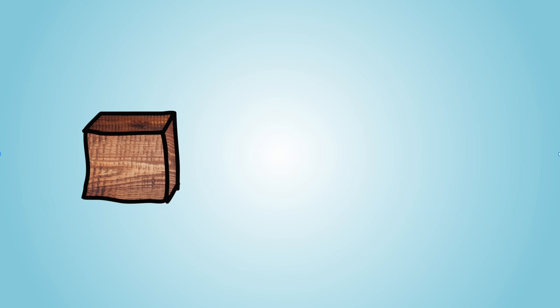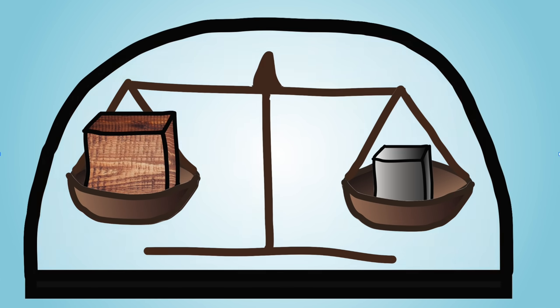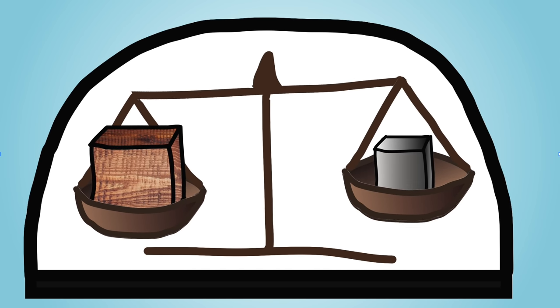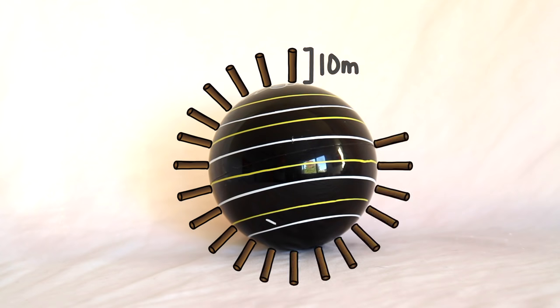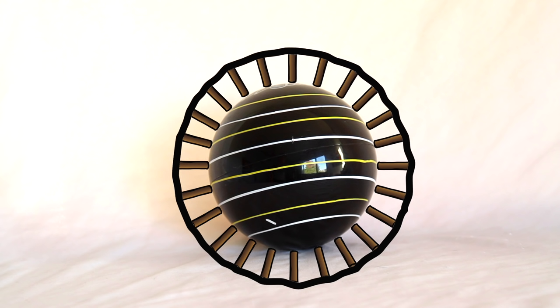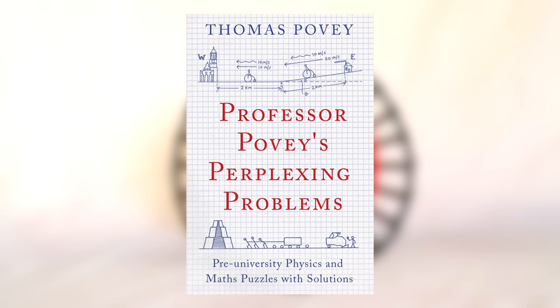If you want to try solving a few more problems using extreme cases, here are a few: You've got a large wooden block and a smaller lead block balanced so they have the same mass, inside an airtight glass dome. You then suck out all the air — will the balance tip toward the wooden block, the lead block, or stay balanced? Also: you surround an entire planet with telephone poles that are 10 meters high. How much longer is the wire around the top of the poles than the circumference of the planet? You don't need to know the radius. This problem was inspired by Thomas Povey's book, Professor Povey's Perplexing Problems.